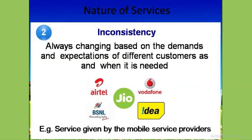Second is inconsistency. The second important characteristic of services is inconsistency. Since there is no standard tangible product, services have to be performed exclusively each time. Different customers have different demands and expectations, so services have to be performed each time according to the demand and expectation of each customer. Same services may be provided differently by different service providers. For example, the mobile services provided by Airtel are quite different from the services provided by Jio.